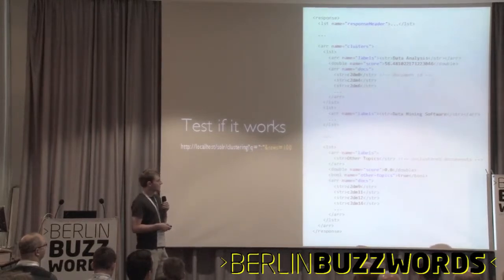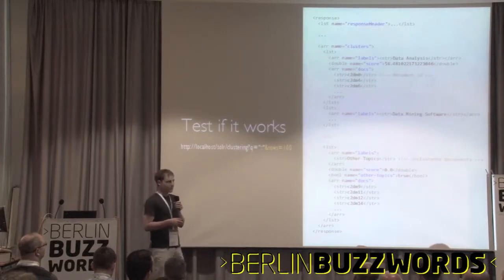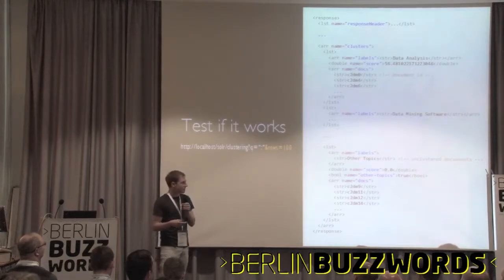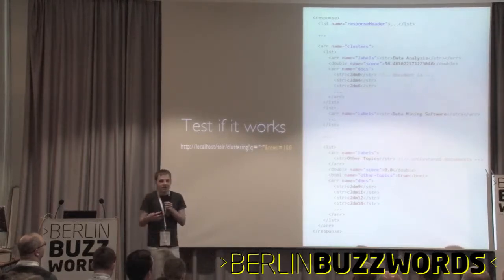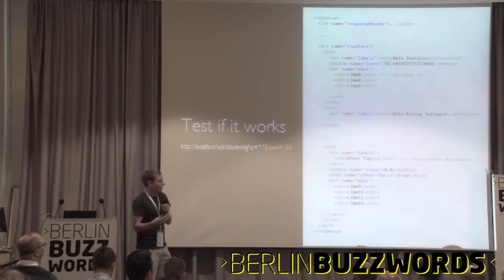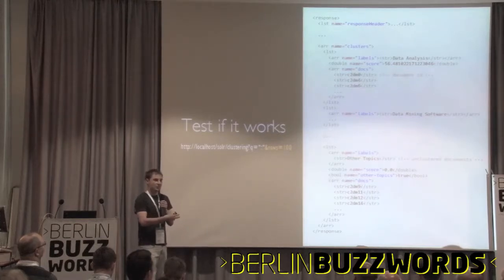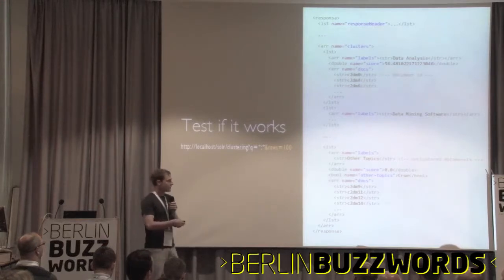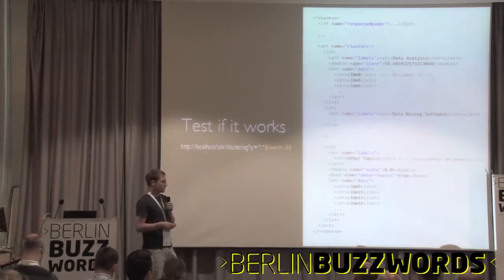One thing to notice is that there is an 'Other Topics' cluster, which contains documents the algorithm didn't know where to put. This is in contrast to k-means, which tries to stuff every document into some cluster. Here we allow the flexibility to leave out documents that we don't know how to cluster.